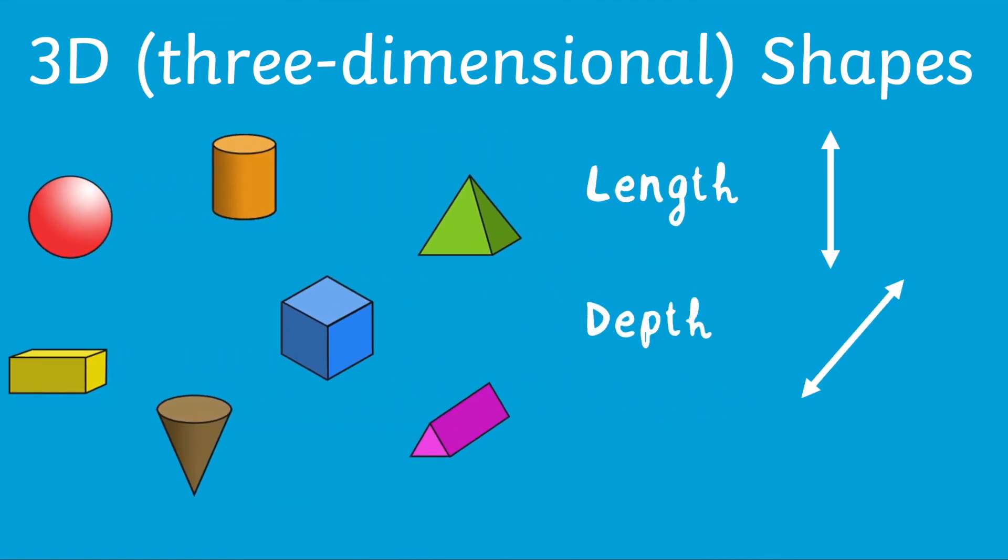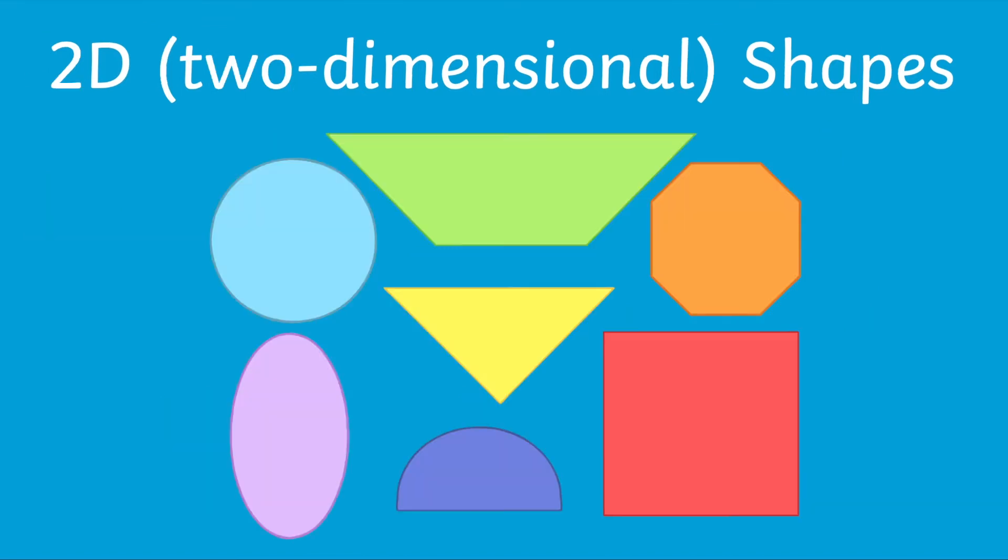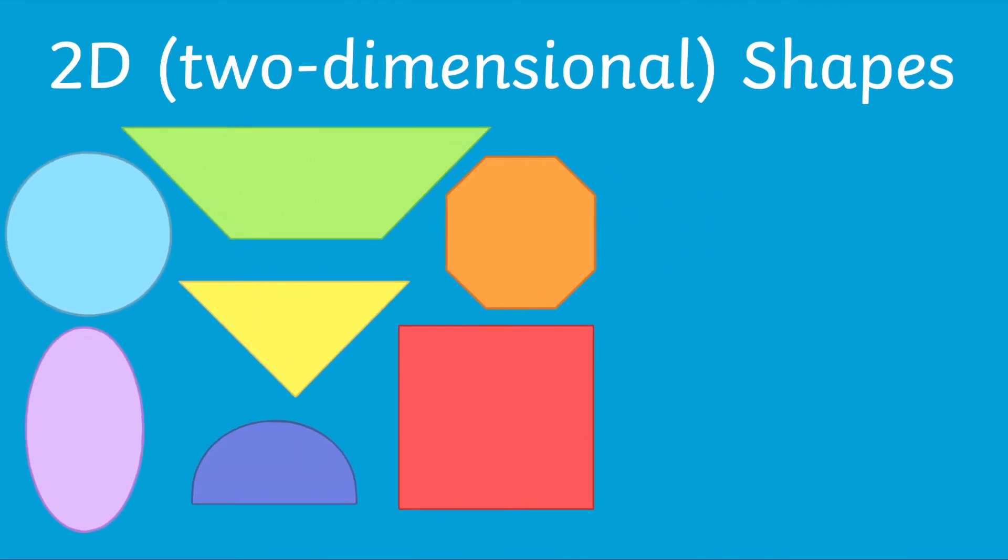The main difference between 2D shapes and 3D shapes are their dimensions. A 2D or two-dimensional shape, however, only has length and height as the dimensions.